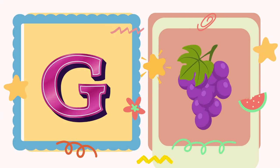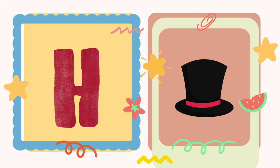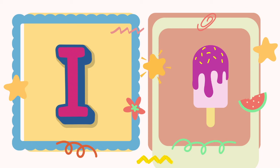G. G is for grapes. H. H is for hat. I. I is for ice cream.